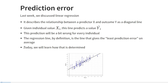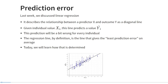Today we will learn what exactly it means that this line gives the least possible prediction error. Linear regression models are estimated using the ordinary least squares method, and this method minimizes the total prediction error.